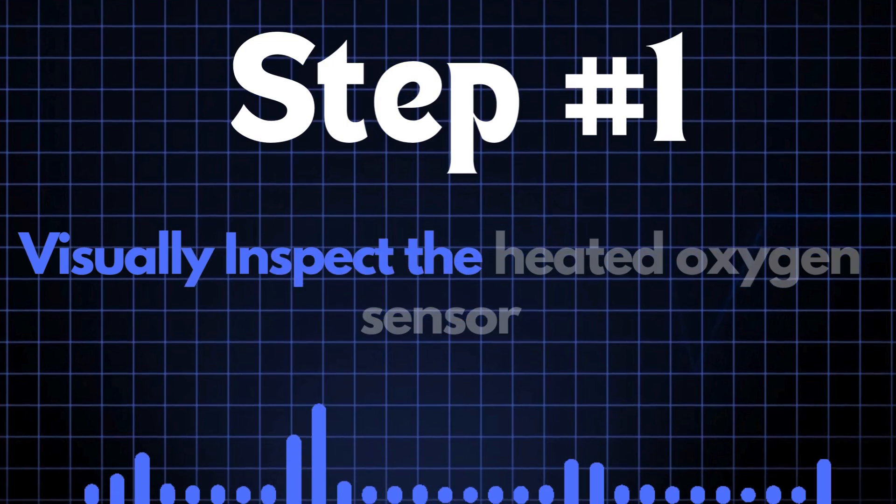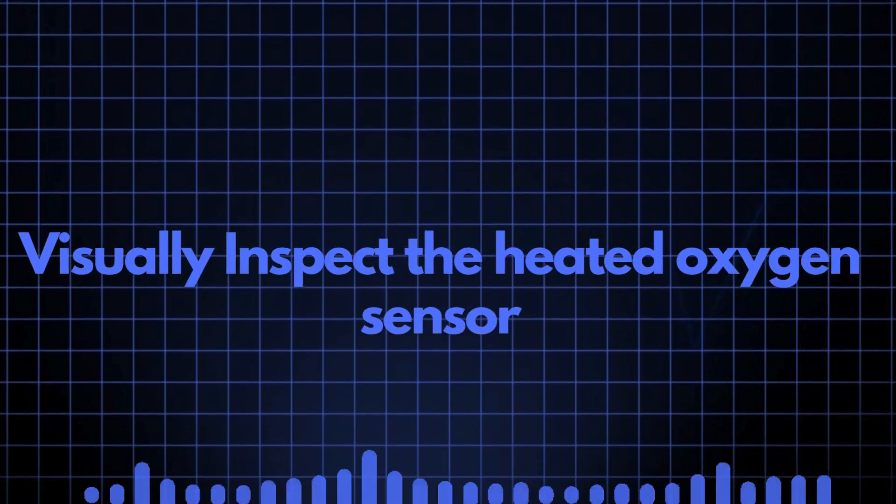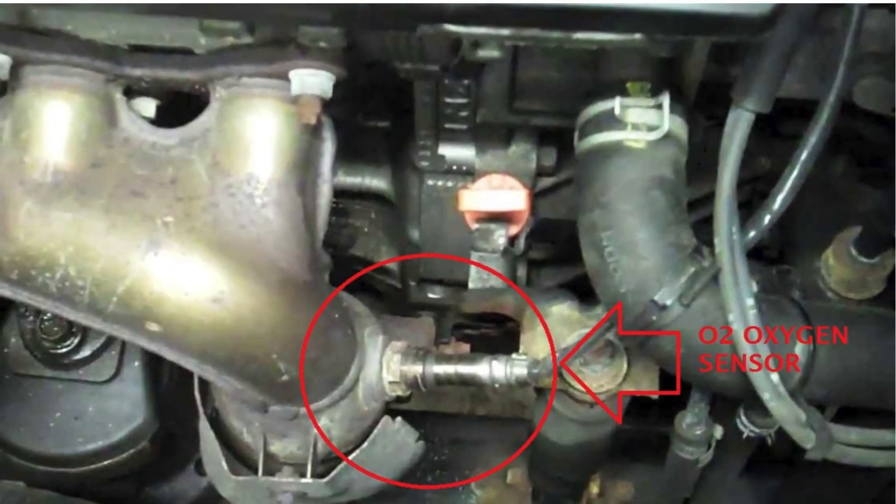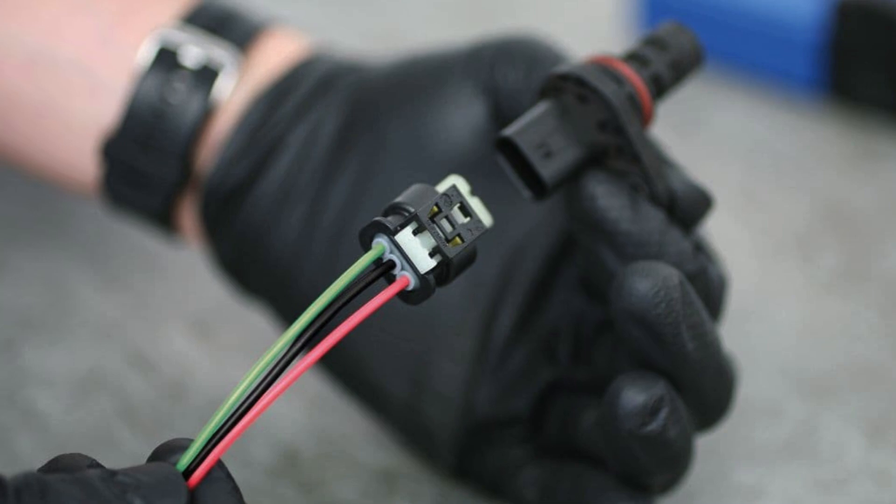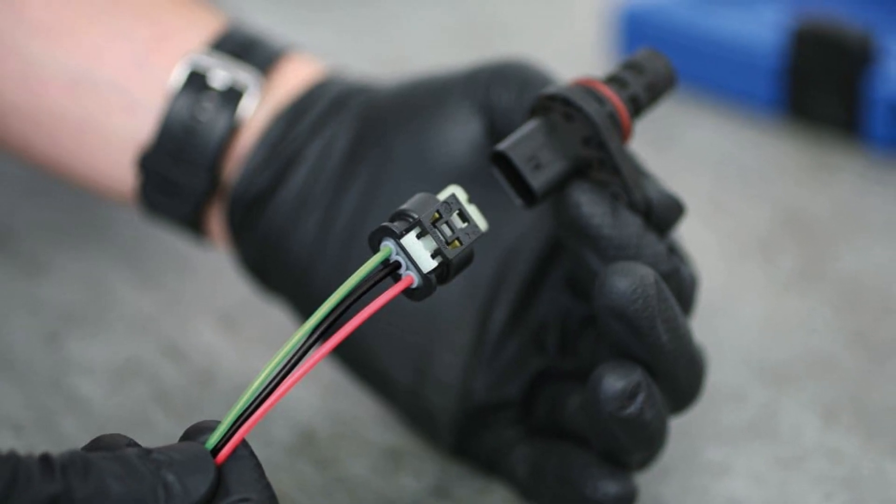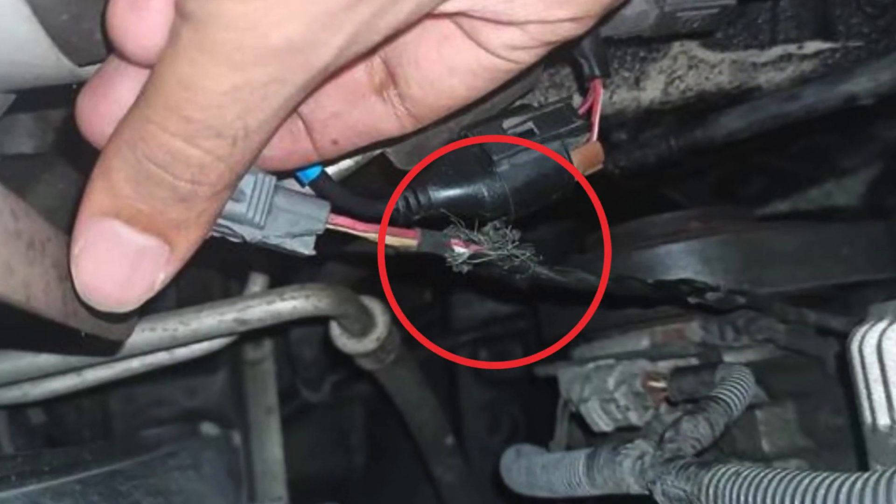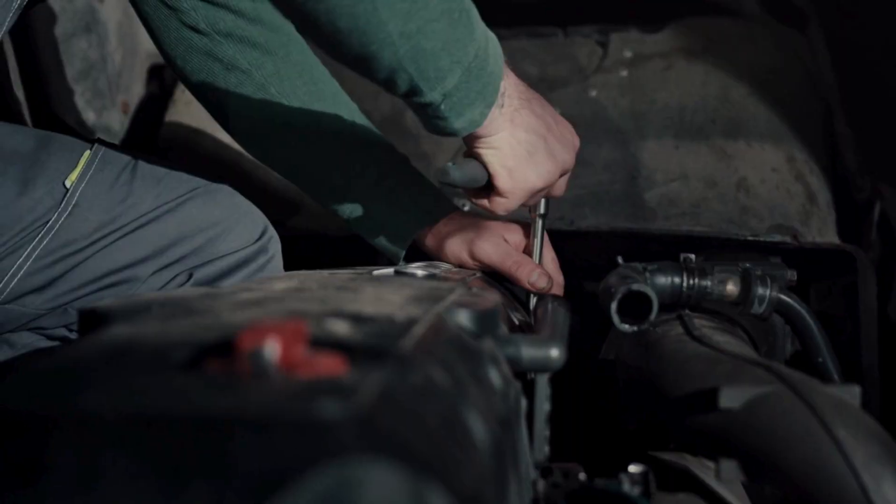Step 1. Start by visually inspecting the heated oxygen sensor. Carefully examine the sensor itself, along with the wiring and connectors. Look for any signs of physical damage, such as cracks, frayed wires, or loose connections.